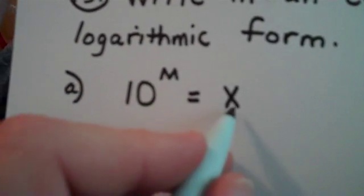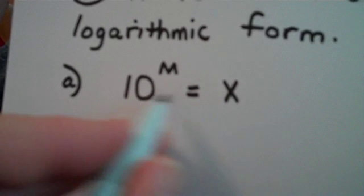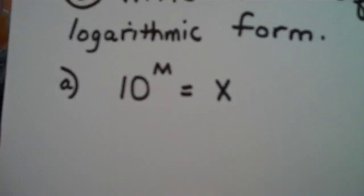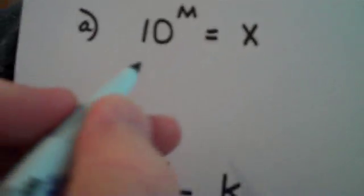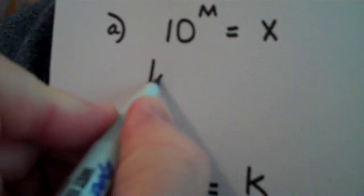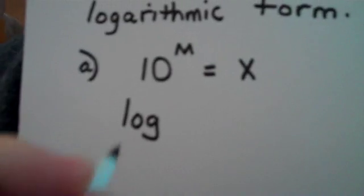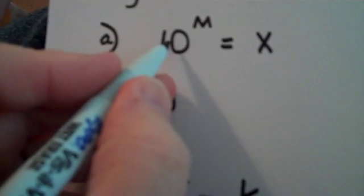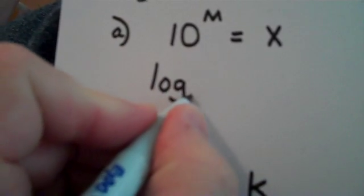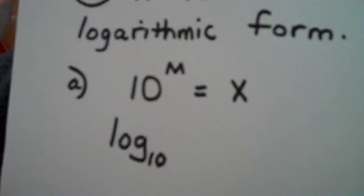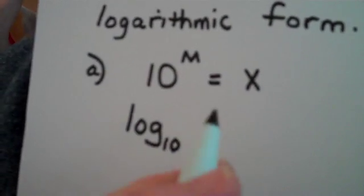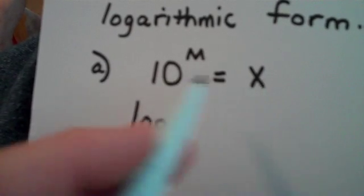Let's look at part a: 10 to the M power equals x. This is currently referred to as exponential form. We want to convert it into log form. We use a log function. The base here is 10, so we're going to emulate that base here: log base 10.